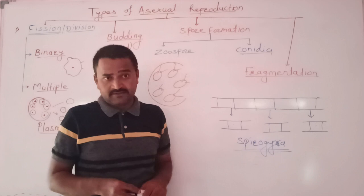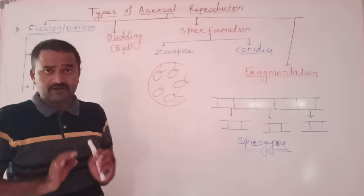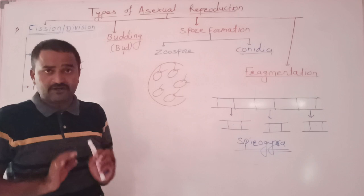Then some higher plants also reproduce by asexual method, but in higher plants the method of asexual reproduction is called vegetative reproduction or vegetative propagation. In next lecture, I am going to teach about the methods of vegetative propagation.